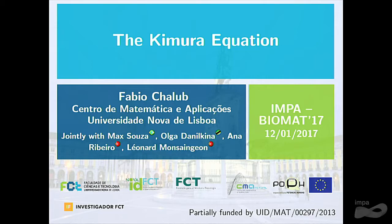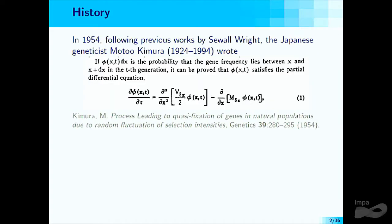I will let you think about what this flag here represents, but if you are really curious, you can ask me later on. I'm sure you know where I'm from. The Kimura equation was introduced by a Japanese geneticist, Moto Kimura, in 1954. That's basically this equation here.